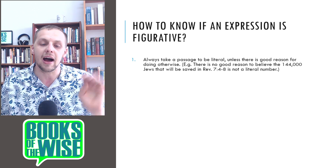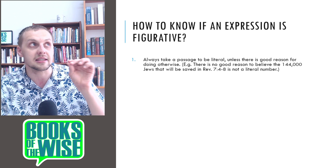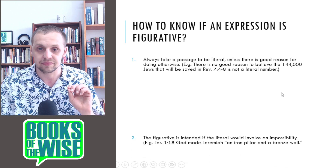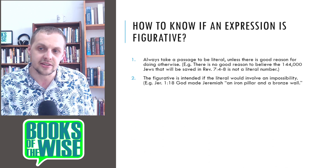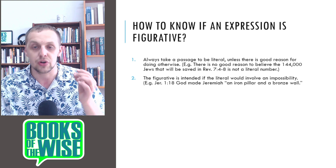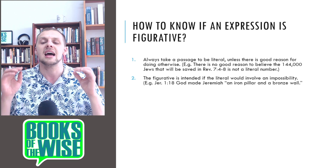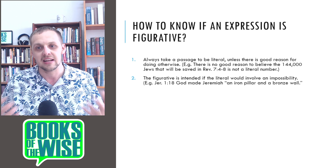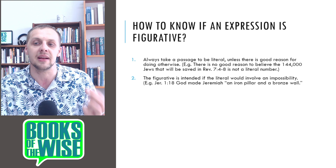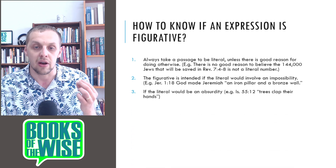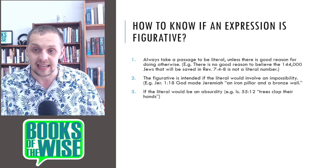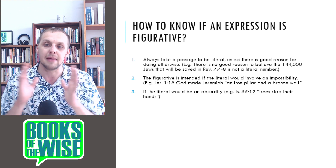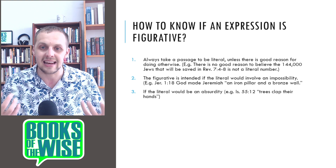Here are five times when you know something is clearly figurative. First, the figurative is intended if the literal would involve an impossibility. For example, Jeremiah 1, verse 18: God made Jeremiah an iron pillar and a bronze wall — that's obviously figurative. There's no way Jeremiah could literally be made an iron pillar and a bronze wall. Second, if the literal would be an absurdity, then you know it's figurative — for example, Isaiah 55, verse 12: trees clap their hands and mountains jump.